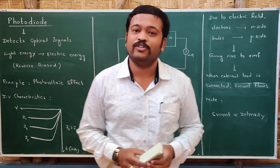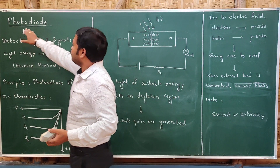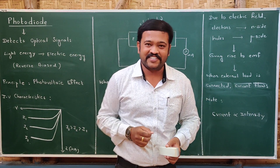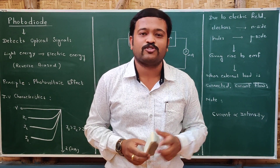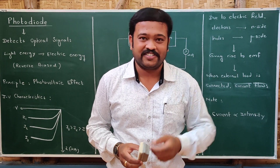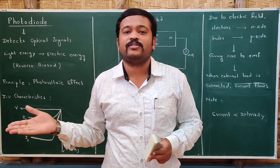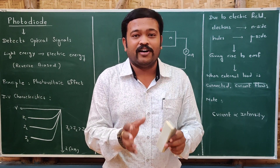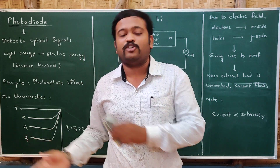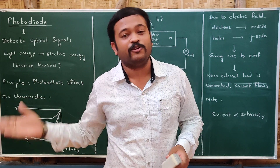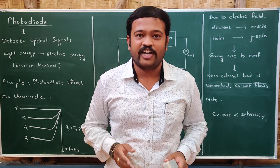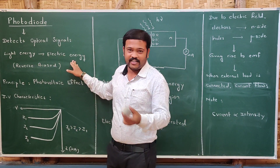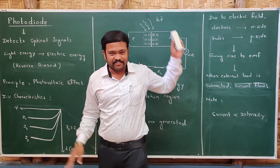Let us start with the first one, the photodiode. The name itself says 'photo' — it is a diode which detects optical signals. One common application is fire alarms: when there is a fire in a building, the diode detects the optical signal and gives an alarm to all people present. So the main purpose is detecting optical signals. It is a diode in which light energy is converted into electric energy — light falls on it and it converts to electrical energy.